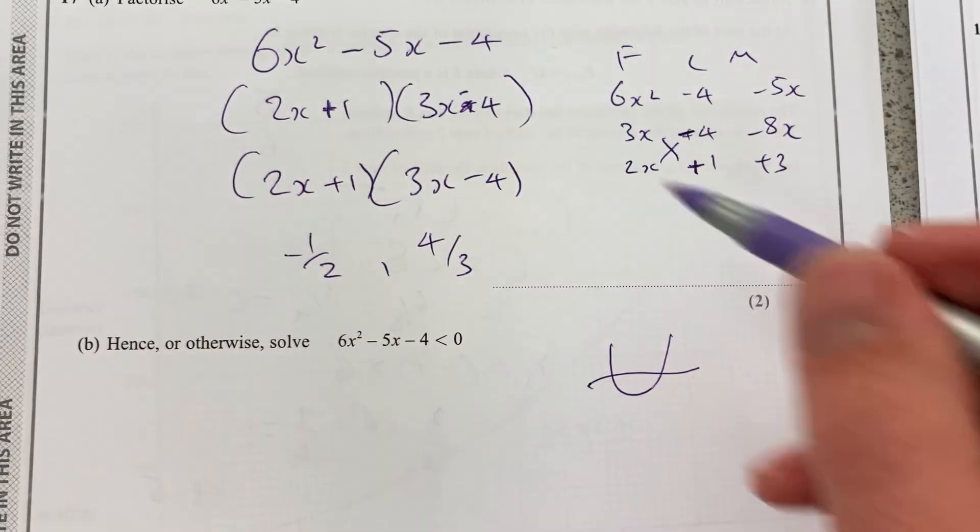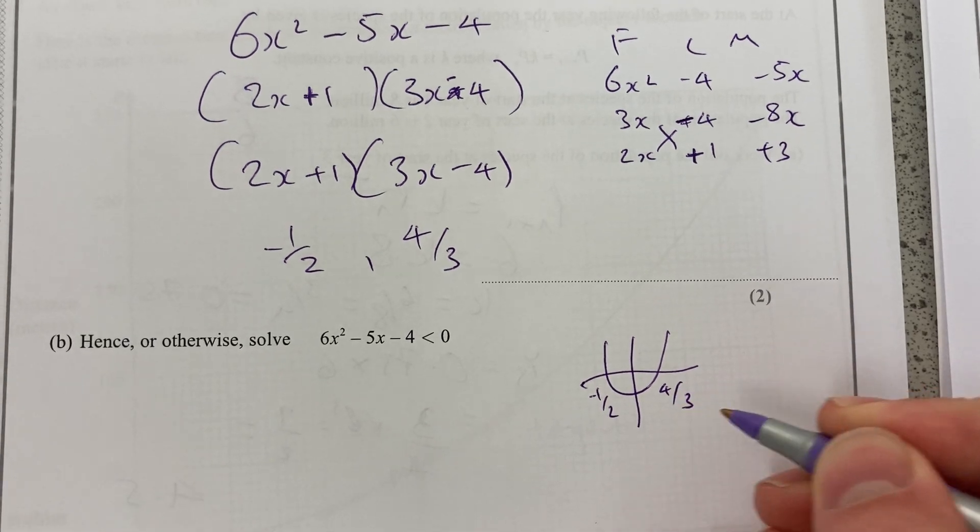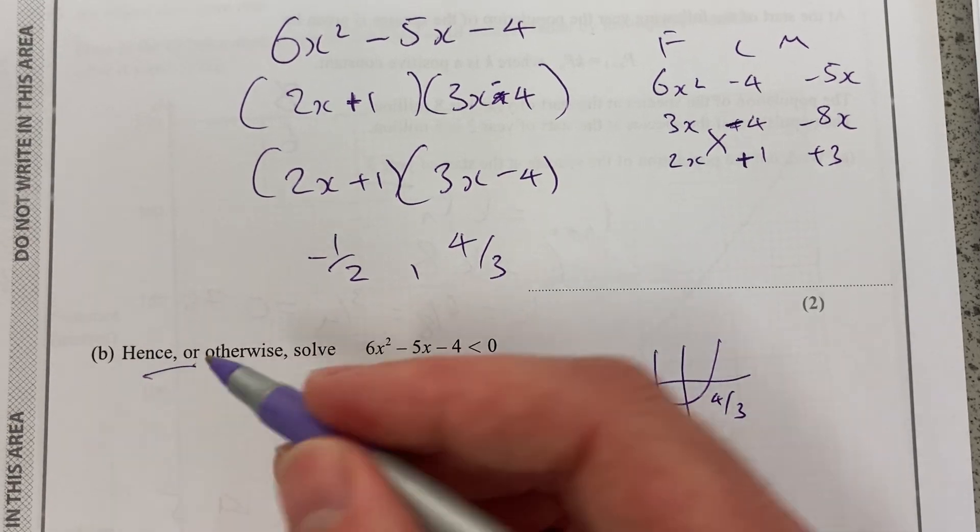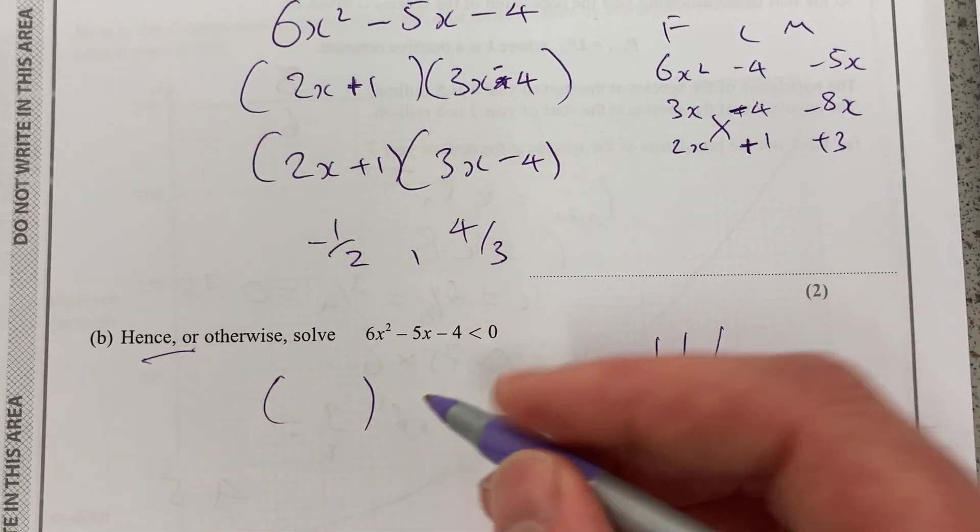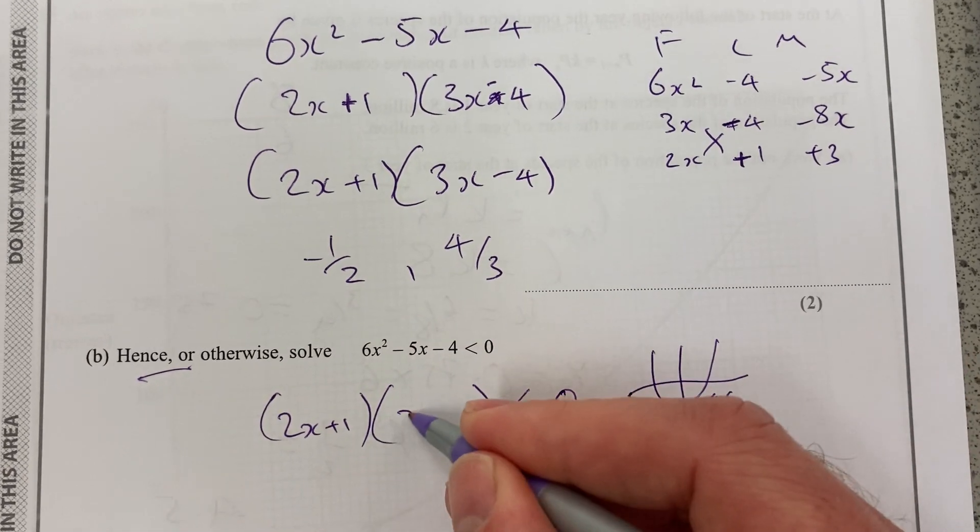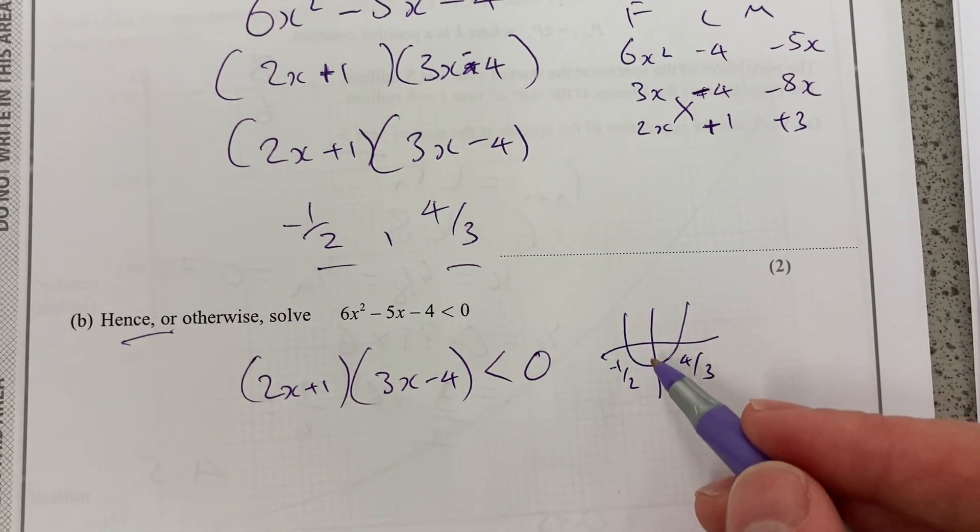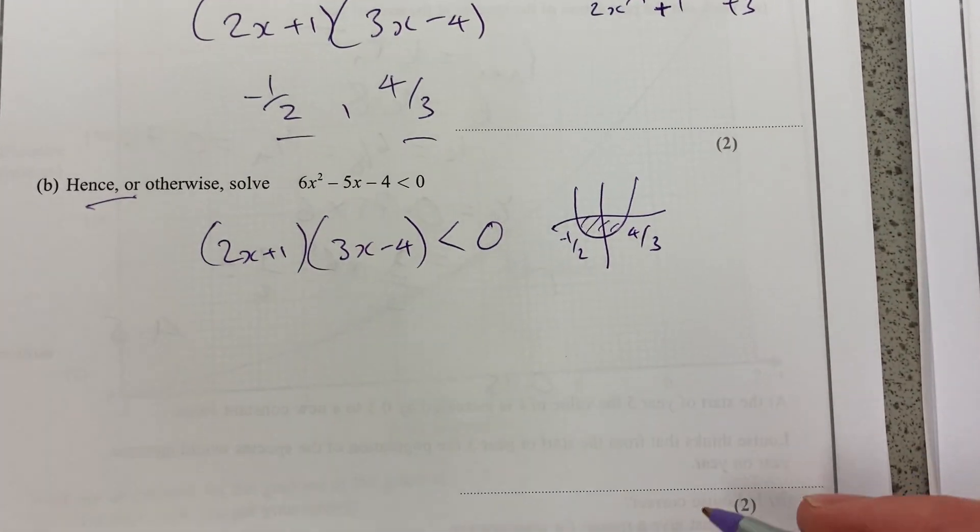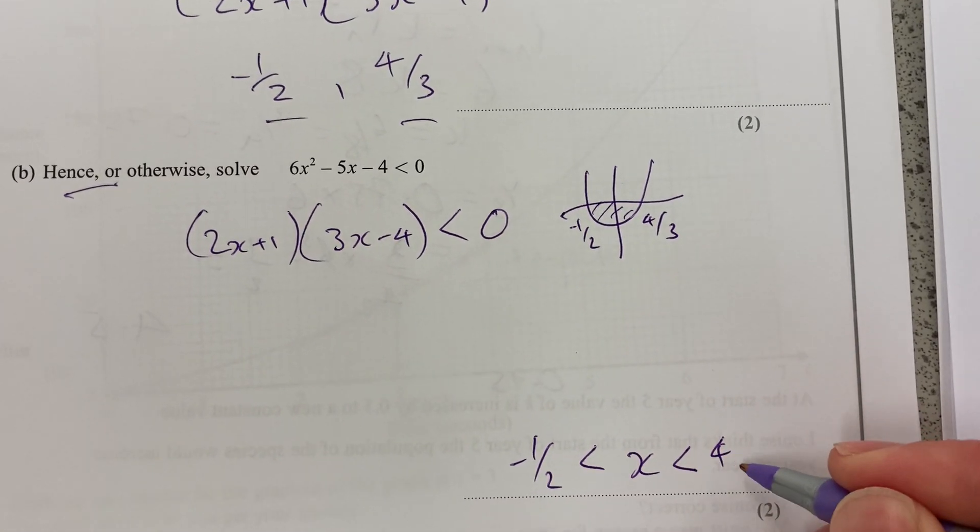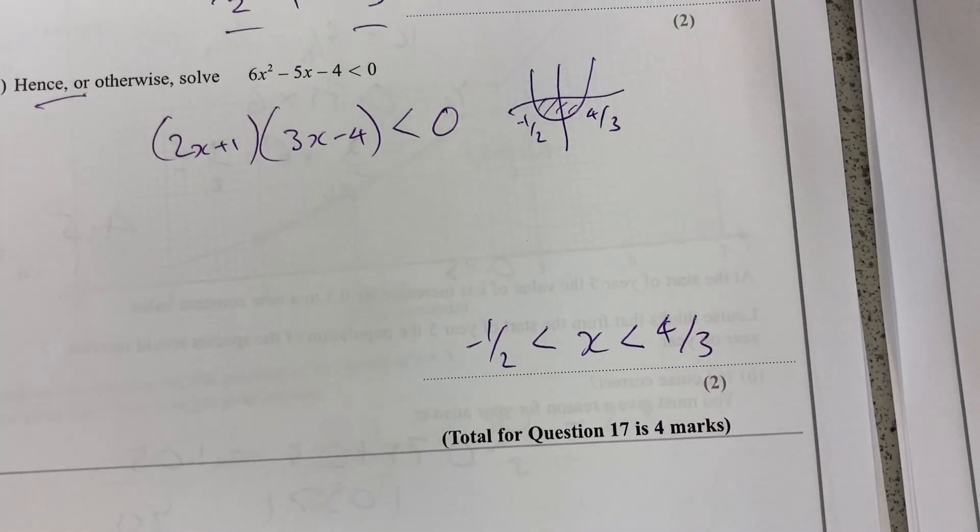If I draw that graphically, it means I've got a positive quadratic graph cutting the x-axis at minus a half and 4 over 3. Now, we want to say, hence or otherwise, they usually mean use the fact you've just factorized it to find out when that would be less than 0. 2x plus 1, 3x minus 4. Well, if those are the points there where it cuts the x-axis, where would it be less than 0? Well, when x is between minus a half and 4 over 3. That'll get us those two marks there.